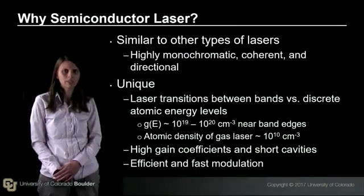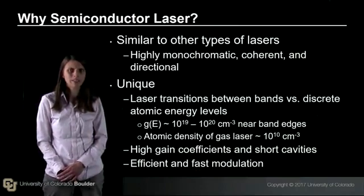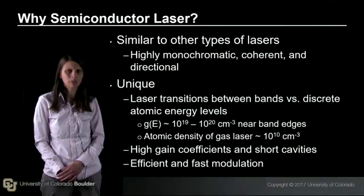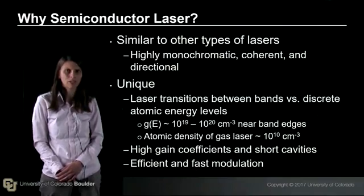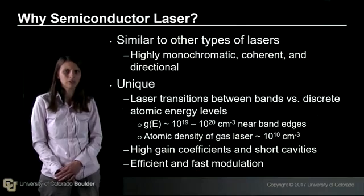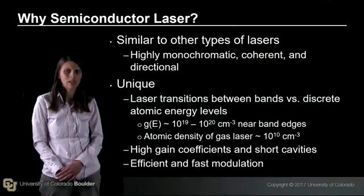But it operates on a different set of transitions — the laser transitions are between bands versus discrete energy levels. Looking at the density of states near the band edges, we find that it's between 10 to the 19 and 10 to the 20 per centimeter cubed. This is 9 to 10 orders of magnitude larger than the density of states in a gas laser. The consequence is that semiconductor lasers have high gain coefficients and short cavities, and they can be modulated efficiently and very quickly.